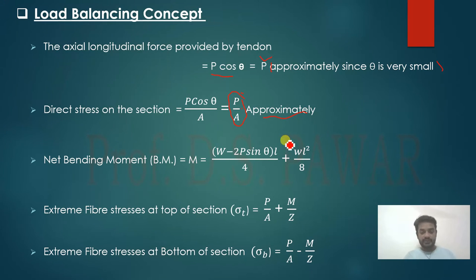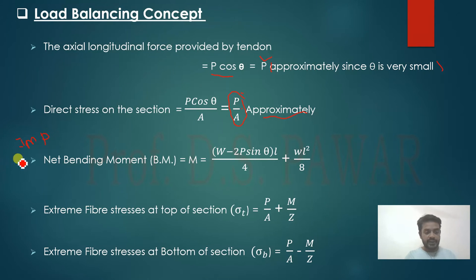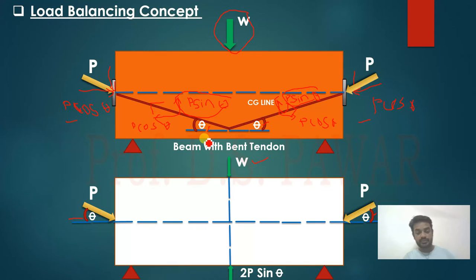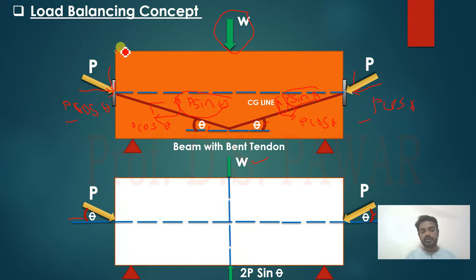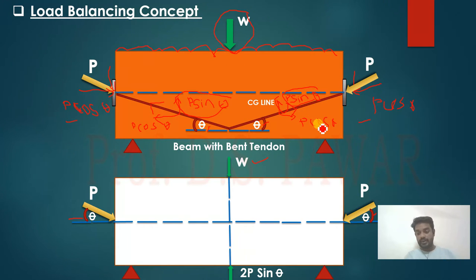The important part in the load balancing concept is the net bending moment. This beam is subjected to two moments: first, the bending moment due to the point load W; and second, the bending moment due to the self-weight of the beam, which acts as a UDL. We have to calculate both moments.